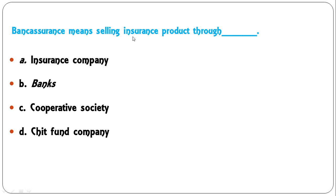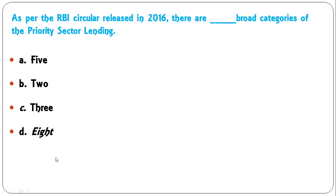Bank Assurance means selling insurance products through — insurance company, banks, cooperative society, or chit fund company? Bank assurance is a concept where banks tie up with insurance companies to sell insurance products. So B — banks — is the correct answer here.